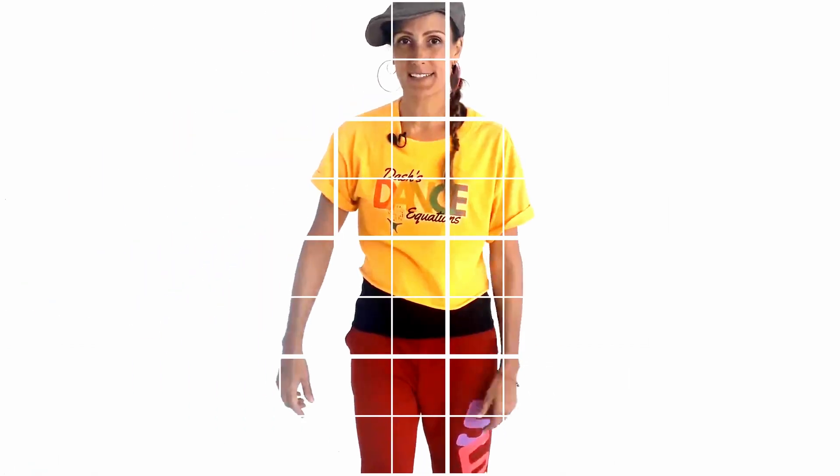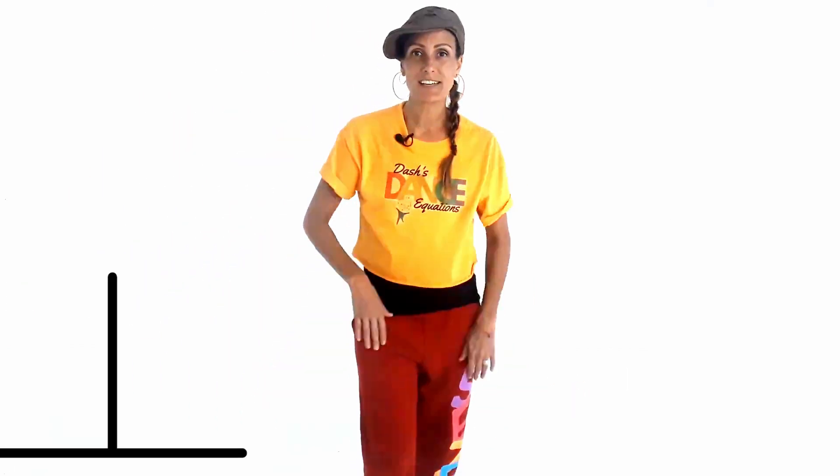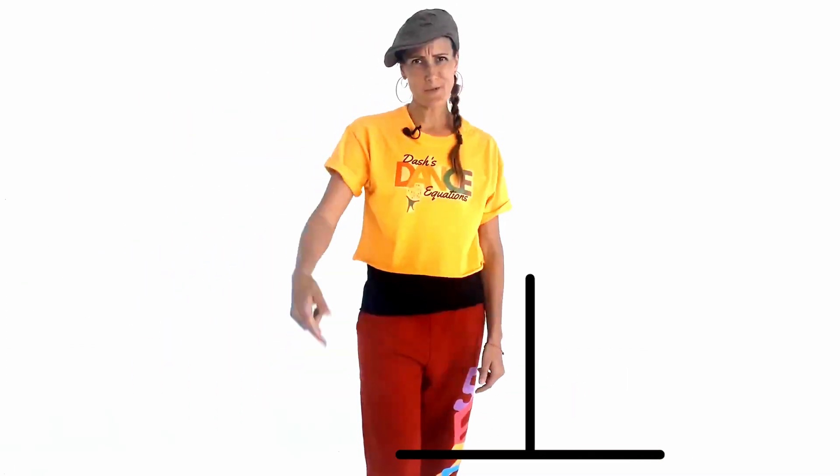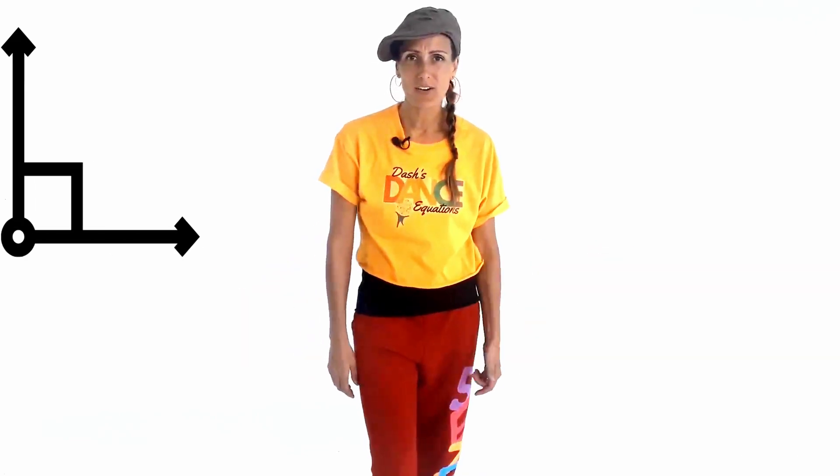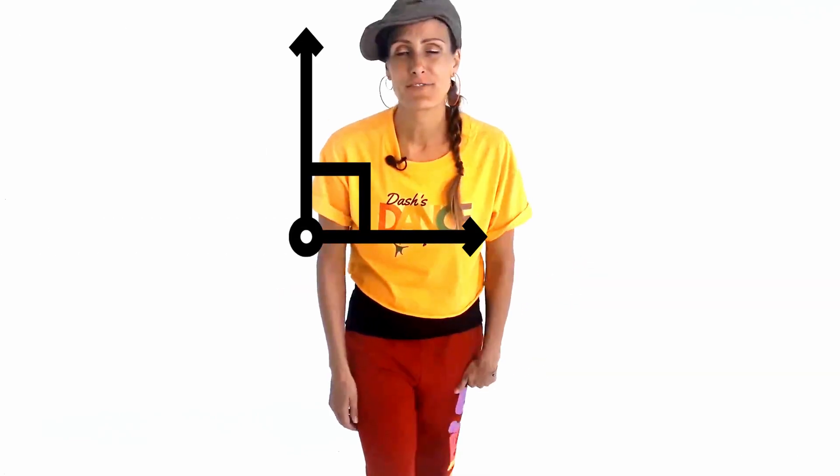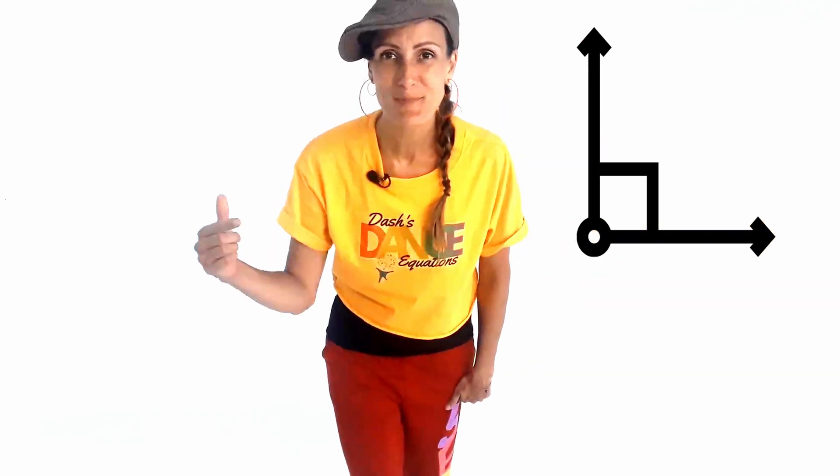If you've cleared a space and you're ready to move, we're going to do great dances. What's a grid? Two lines that intersect at a right angle. What's a right angle? Let's hear from Professor Pai.